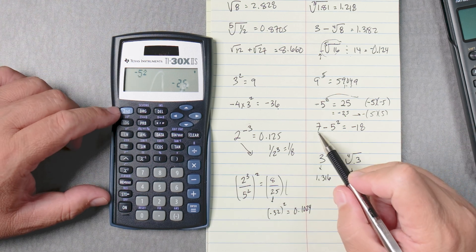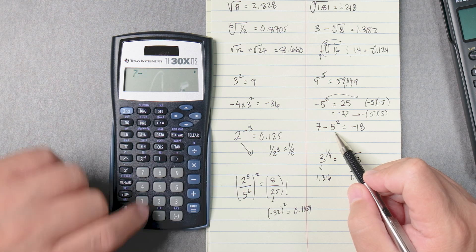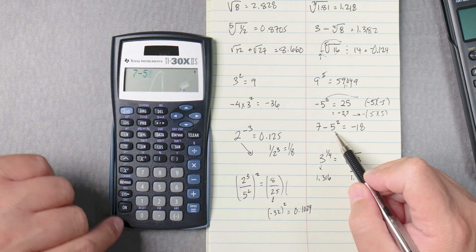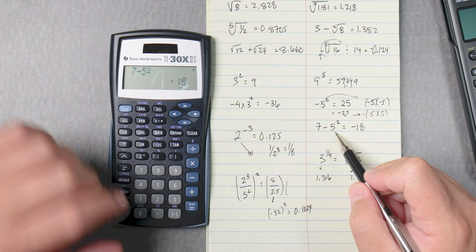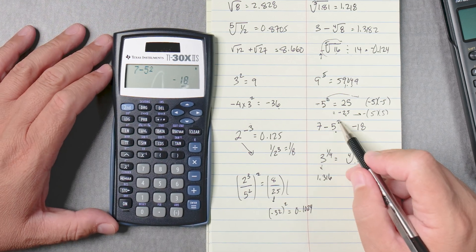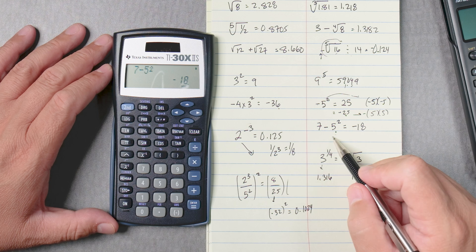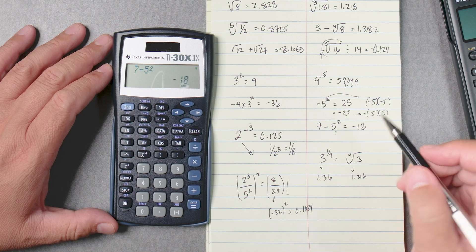Because a lot of the times when you do a problem like this, 7 take away 5 squared, okay, it's going to give you negative 18. Why? Because this is going to be 25 minus 25. 7 take away 25 is negative 18. Okay, so let's do this problem.